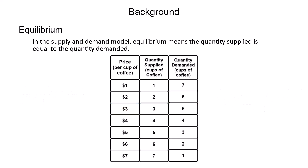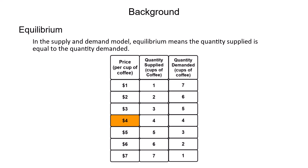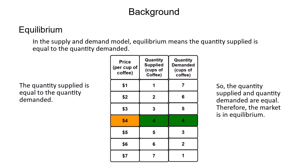If the price the firm is willing to accept for a cup of coffee is $6, it will supply six cups of coffee. However, if the price of a cup of coffee is $6, consumers are only willing to purchase two cups of coffee. So at a price of $6 per cup of coffee, the quantity supplied of six cups is greater than the quantity demanded of two cups. Since the amount of coffee supplied by the firms is greater than what is demanded by consumers, the quantities are not equal and therefore the market is not in equilibrium.